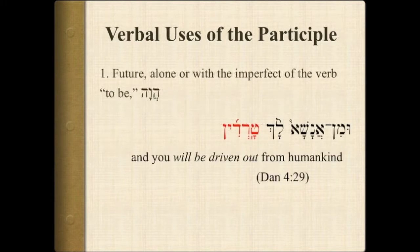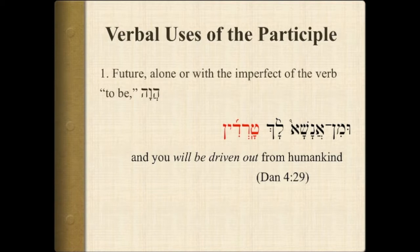So the participle can signal the future, either alone or with the imperfect of the verb to be, hava. In this particular case: "and you will be driven out from humankind," as in Daniel 4:29. Notice that the person is indicated here by a lamed plus pronoun and then the participle.